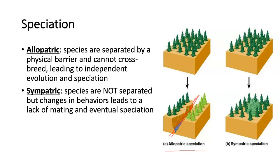Sympatric speciation occurs when species are not separated geographically. In the example on the right, something — most likely a mutation — has changed the genetics of one population of trees enough that it has started to become its own species and will diverge fully over time. Typically, enough genetic changes accumulate that the new population no longer mates with the original, or if they cannot mate and create viable offspring, we consider them a new species.